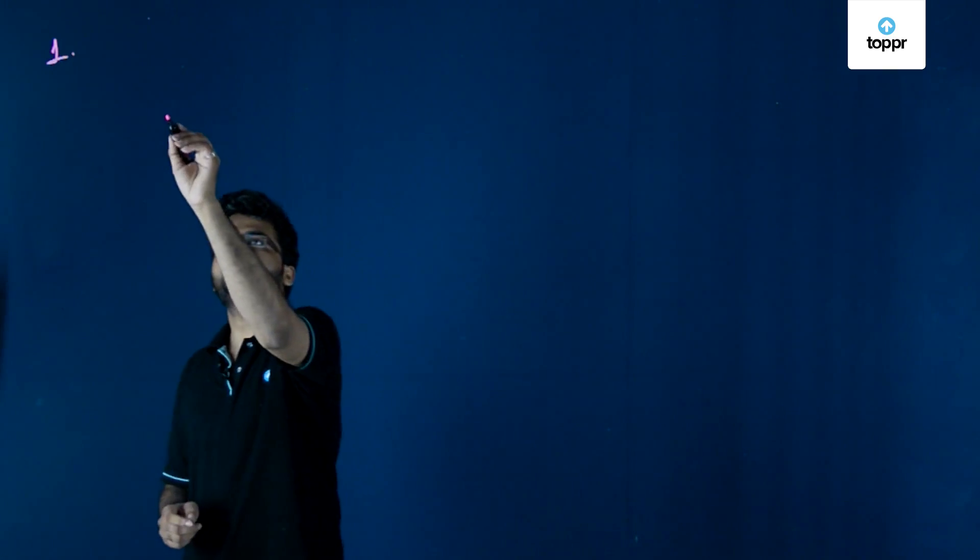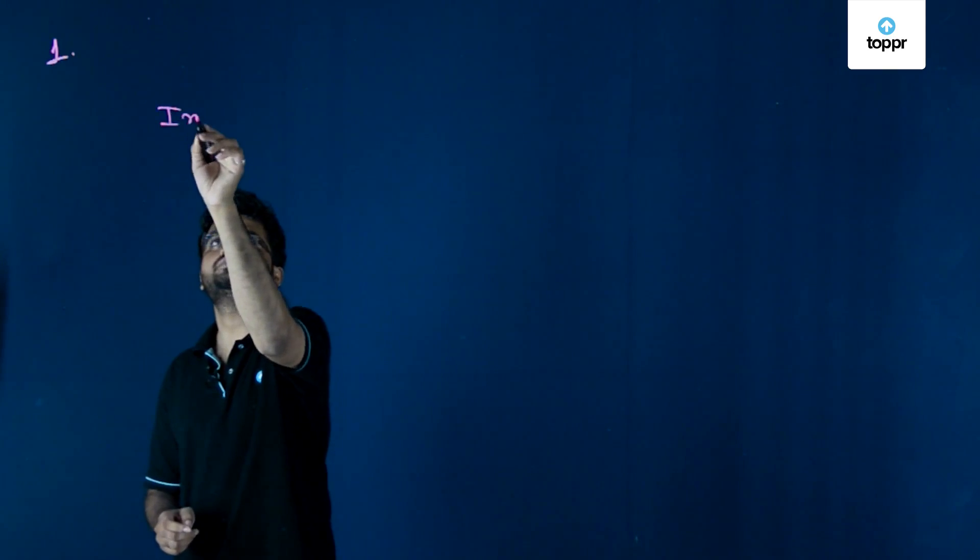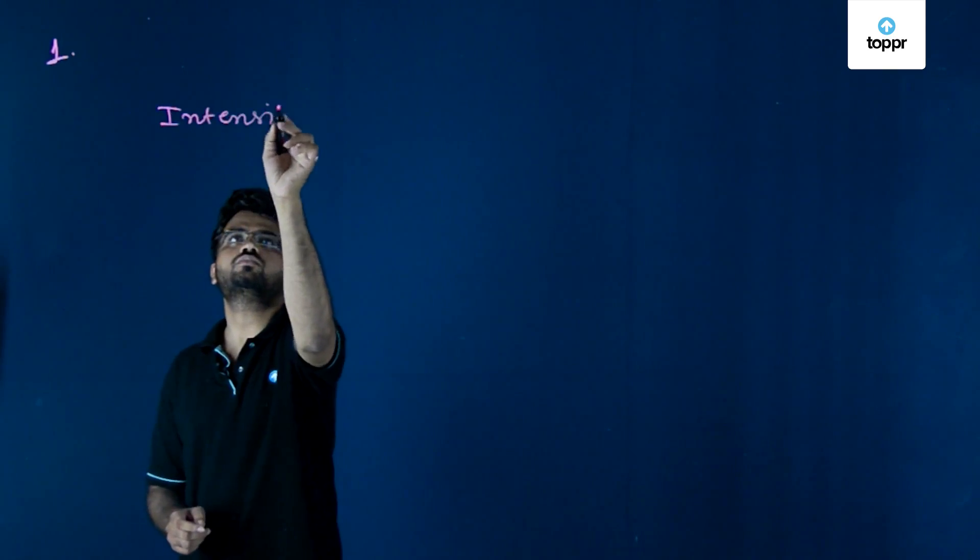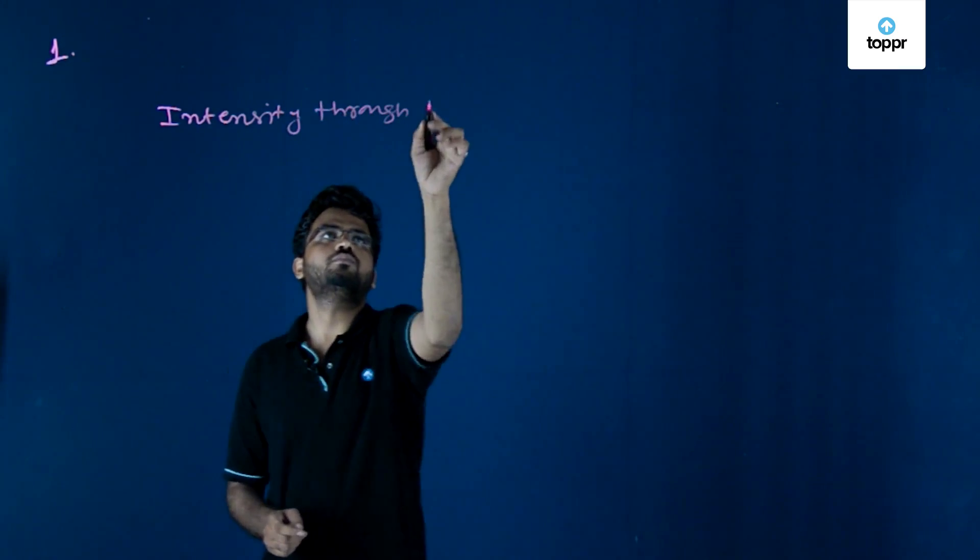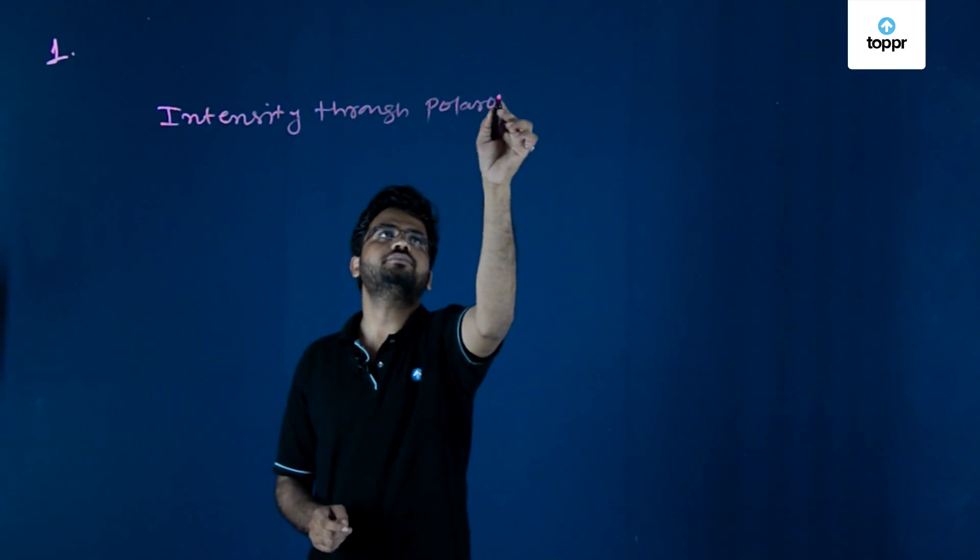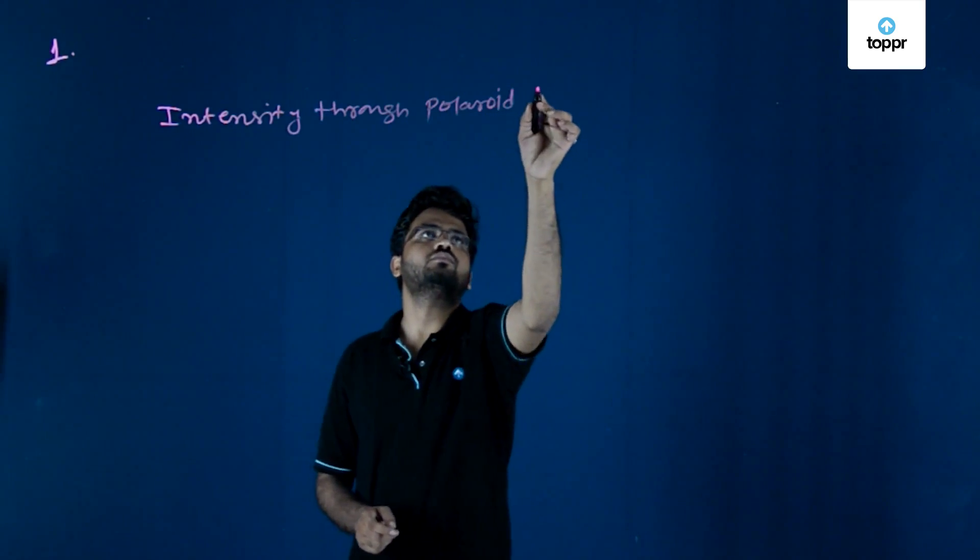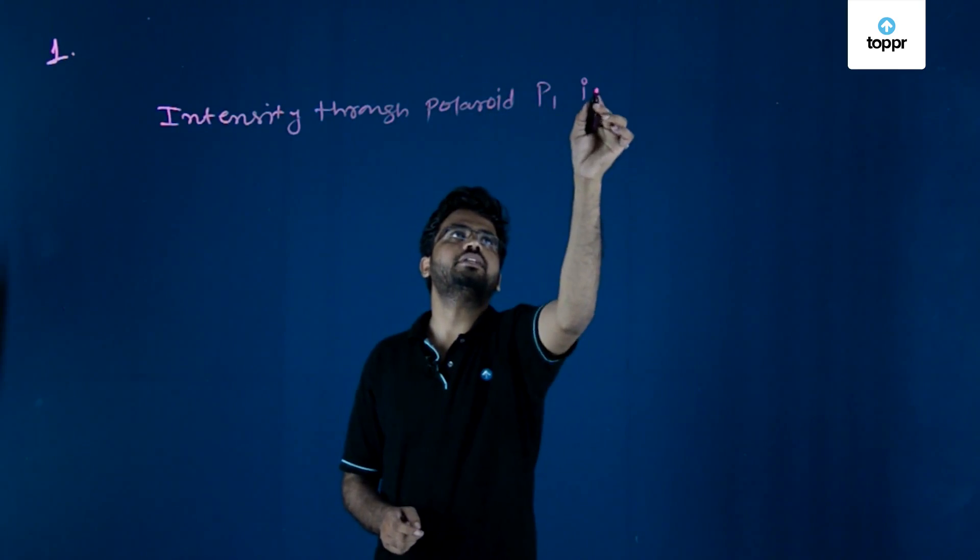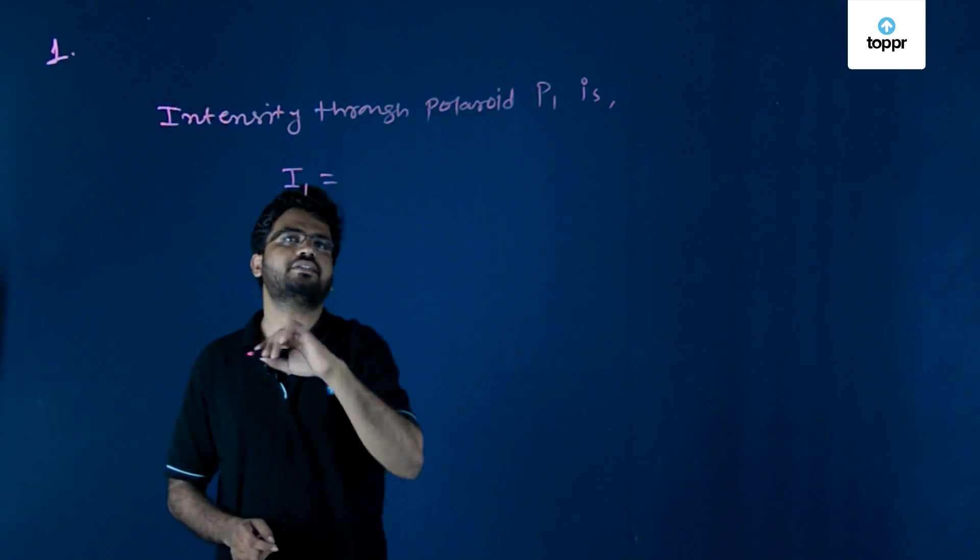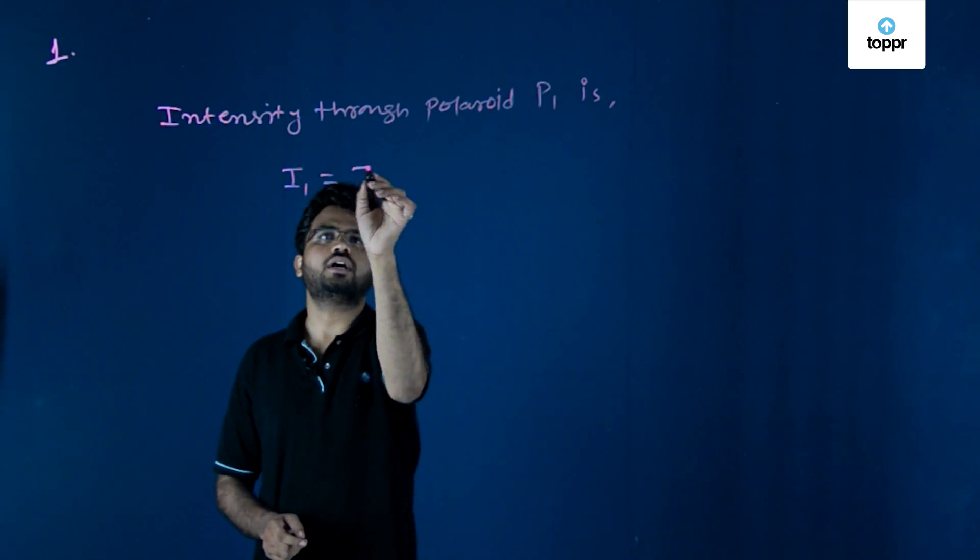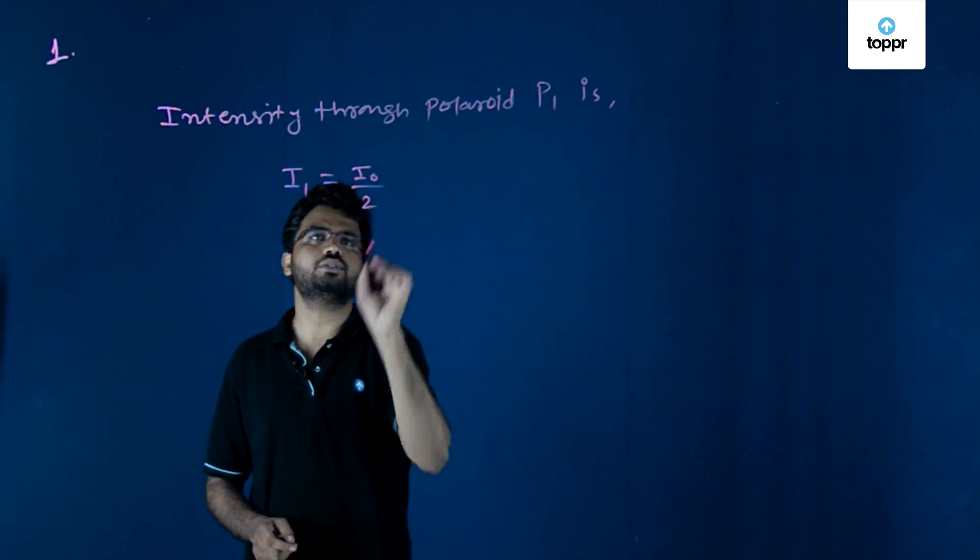So firstly, intensity through Polaroid P1 is given by I₁ equals I₀ by 2.